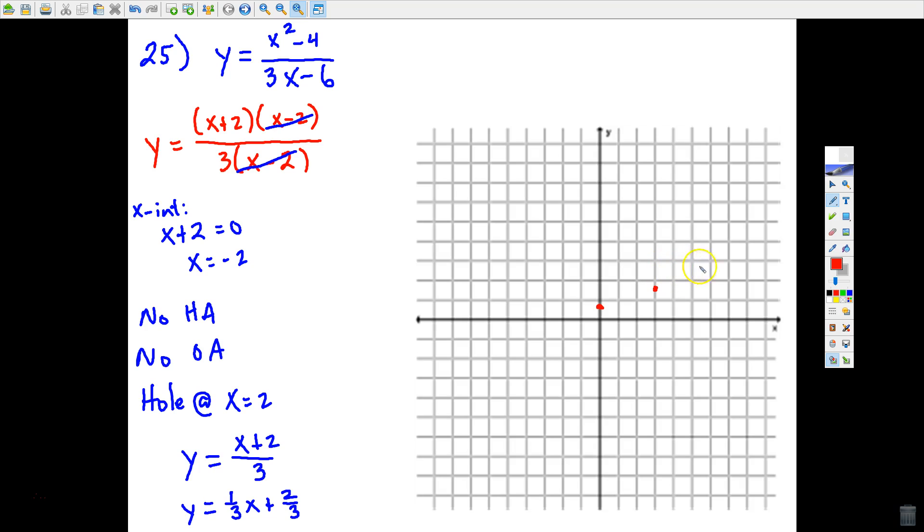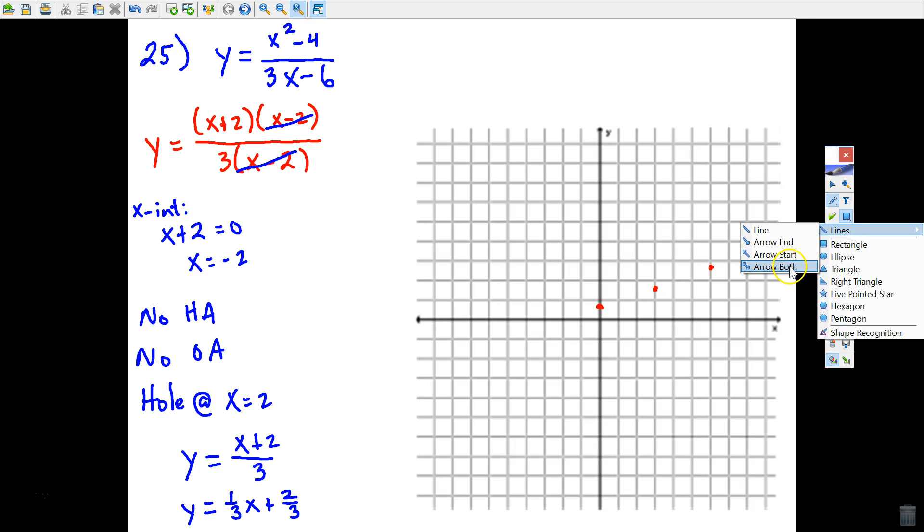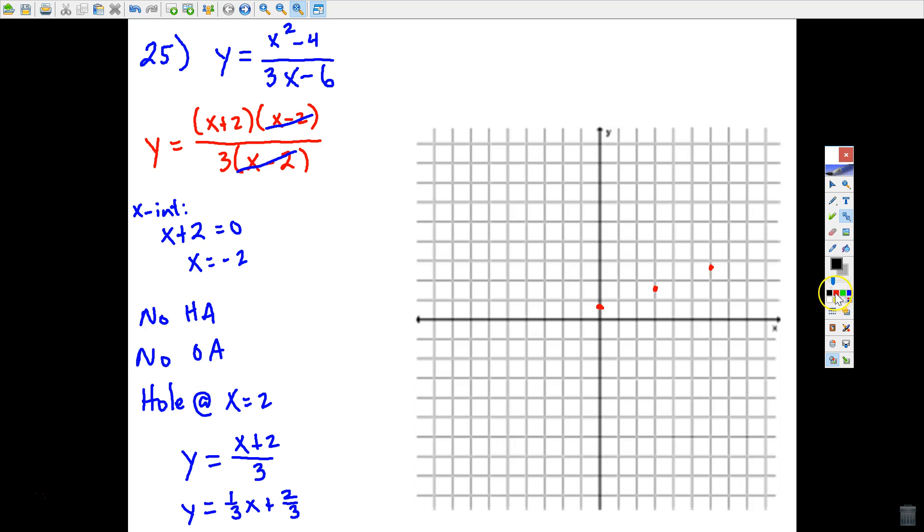Do that again, up 1, right 3. I'm going to grab my straight edge, and I will connect those. Let me get my line here, and I'll go the other way. Okay, and so that's pretty close to the line.